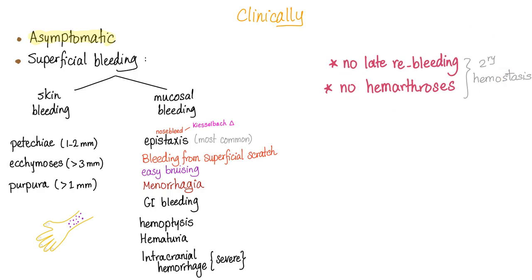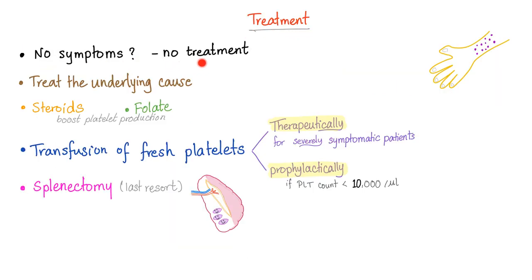Deep bleeding and hemarthrosis are coagulation factor deficiency problems — secondary hemostasis. Treatment: no symptoms, no treatment. Hippocrates said do no harm. Overtreatment is also bad. If the patient is asymptomatic, don't waste resources and don't make the patient's life worse.